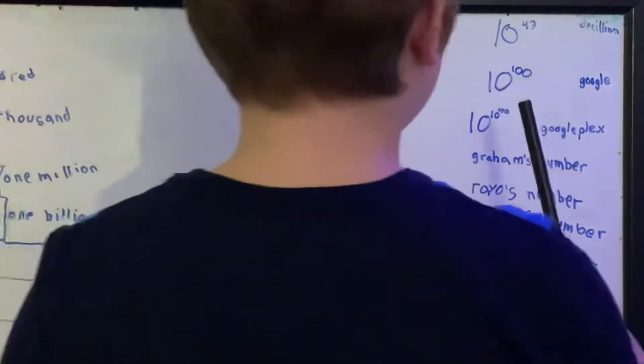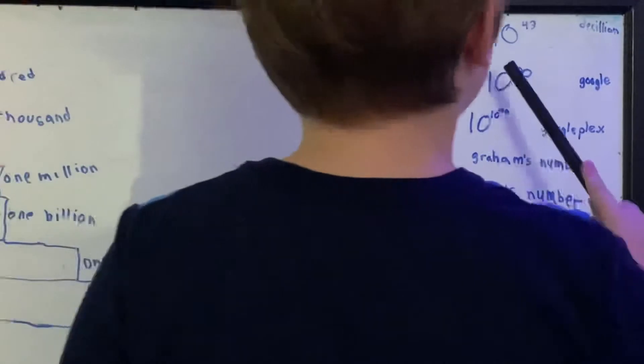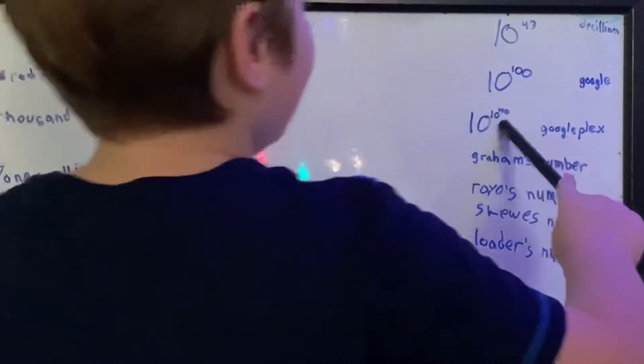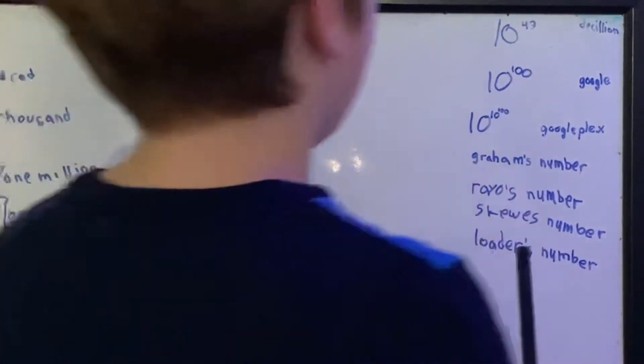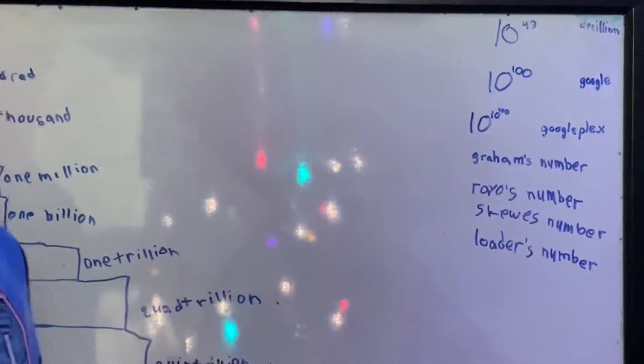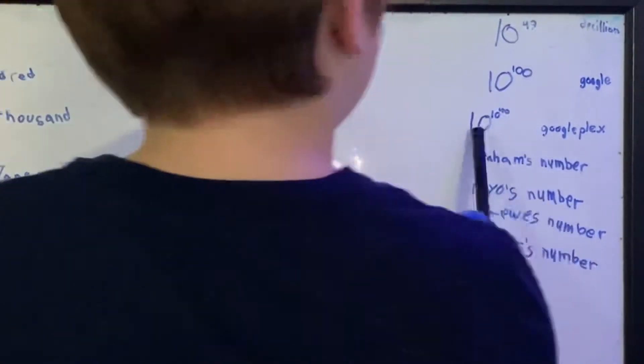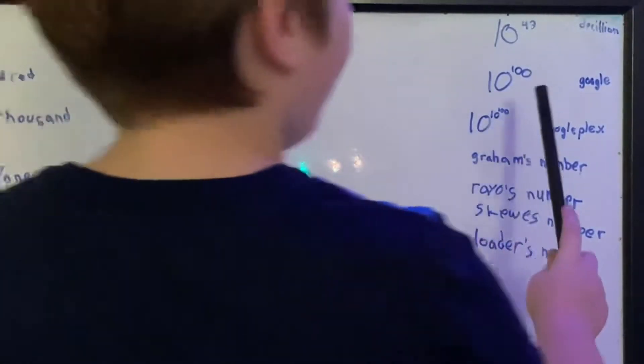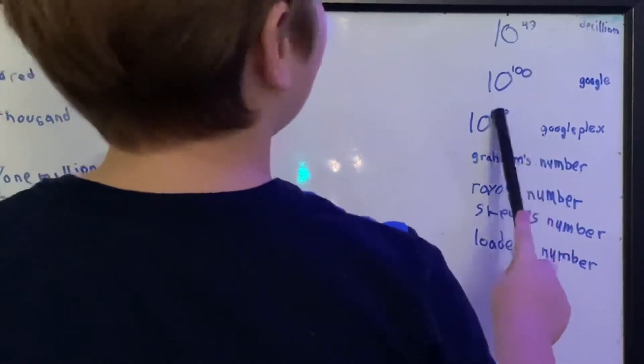And Googleplex, as you can see, this is Google, and a mini Google on top of there. That means 10 to the power of Google, so it means 1 followed by Google zeros.